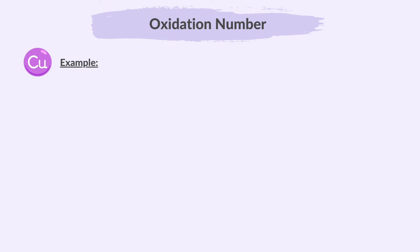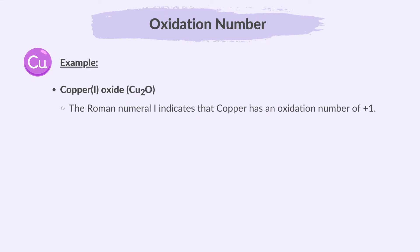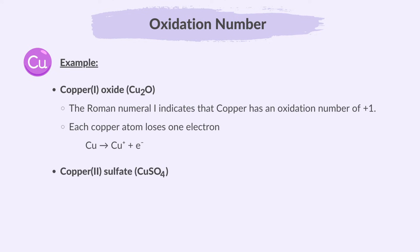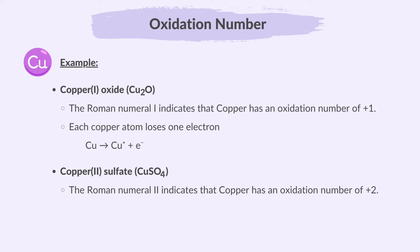Copper is an example of an element that can form different ions with different oxidation numbers. In copper(I) oxide, the Roman numeral 1 indicates that copper has an oxidation number of +1 — each copper atom loses 1 electron. In copper(II) sulfate, the Roman numeral 2 indicates that copper has an oxidation number of +2 — each copper atom loses 2 electrons. So the Roman numeral tells you the specific oxidation number of the element in that compound.